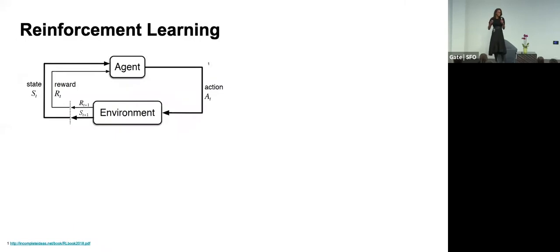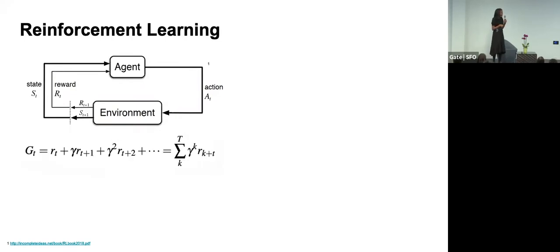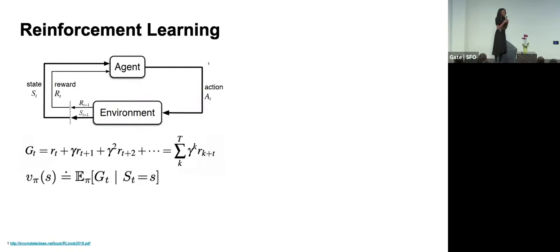I'm going to give a brief introduction to reinforcement learning. In reinforcement learning, you typically have an agent like a robot interacting with its environment, taking actions, and trying to maximize rewards. For example, a robot that wants to walk to the end of a hallway might get a reward of one when it gets there. What we're interested in is the return, which is our long-term discounted reward over time. We estimate a value function — what is the long-term expected reward in a given state — and a policy, which tells us which action to take in a state to maximize long-term reward.